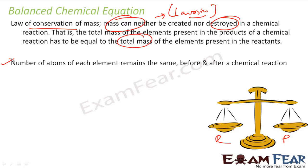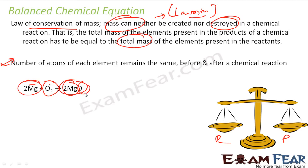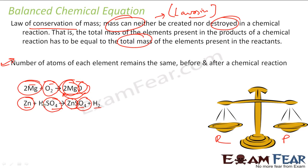For example, in the reaction 2Mg + O₂ → 2MgO, there are two magnesium atoms and two oxygen atoms on each side — both sides have equal numbers. Similarly, Zn + H₂SO₄ → ZnSO₄ + H₂: there is one zinc on each side, one sulfate ion on each side, and two hydrogens on each side. So things are balanced.